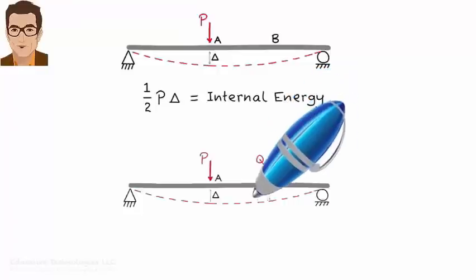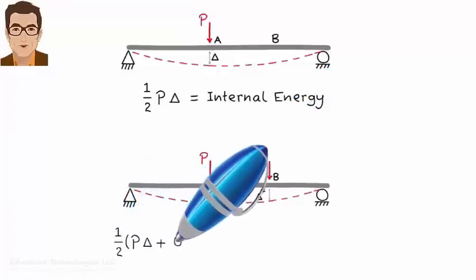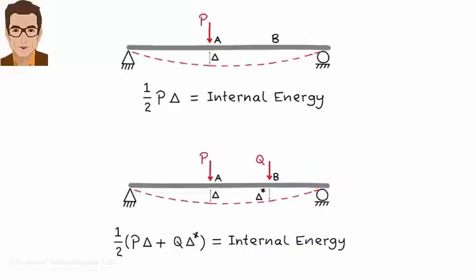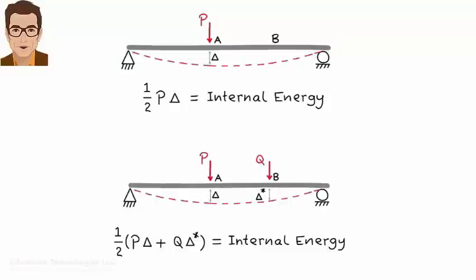Here is another example. The work energy equation for a beam with two loads becomes: one-half P·delta plus Q·delta* equals the internal energy. Here the displacement at B does appear in the equation, but still we cannot calculate it — because the equation has two unknowns, delta and delta*, and we cannot solve for two unknowns with one equation. Simply put, the work energy equation can only be used to determine the displacement under an applied concentrated load, in the direction of the load, when no other applied loads are present. Although this technique has limited practical use, the work energy principle is a basis for more general energy methods, which we will study in future lectures.